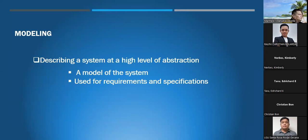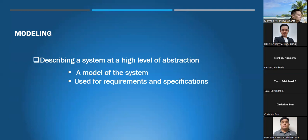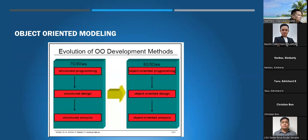Modeling describes a system at a high level of abstraction. Imagine yourself creating a system or a building — without the help of UML, it's hard to develop. For example, when you are creating a building, the first thing you need to do is create a blueprint. UML helps us to build a system in an easy way. It is used for requirements and specification, and object-oriented modeling.